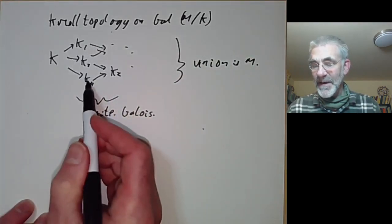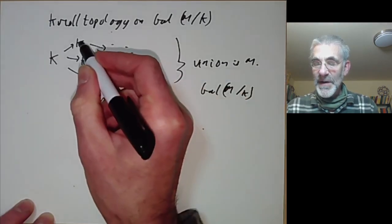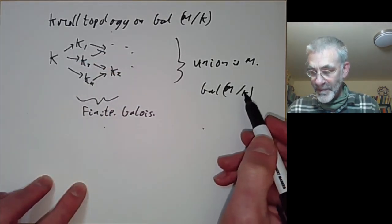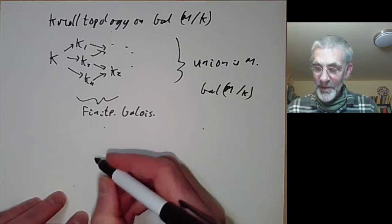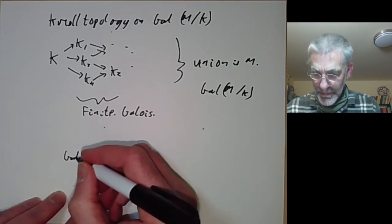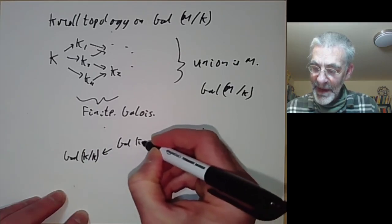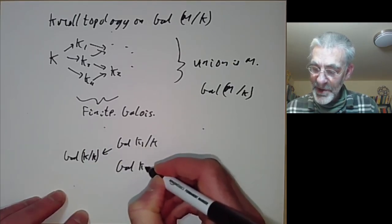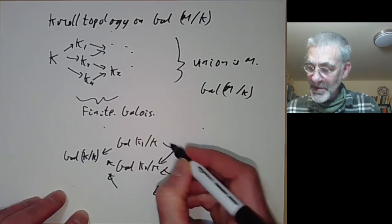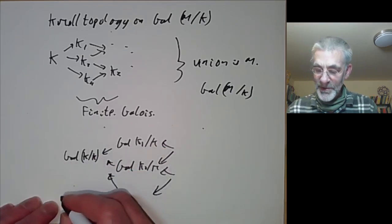Any automorphism — any element of the Galois group of M over K — must act on each of these finite Galois extensions of K. So we get this collection of maps: we have the Galois group of K_i over K, and corresponding to this lattice of finite Galois extensions of K we get a lattice of finite Galois groups. These are all finite groups.